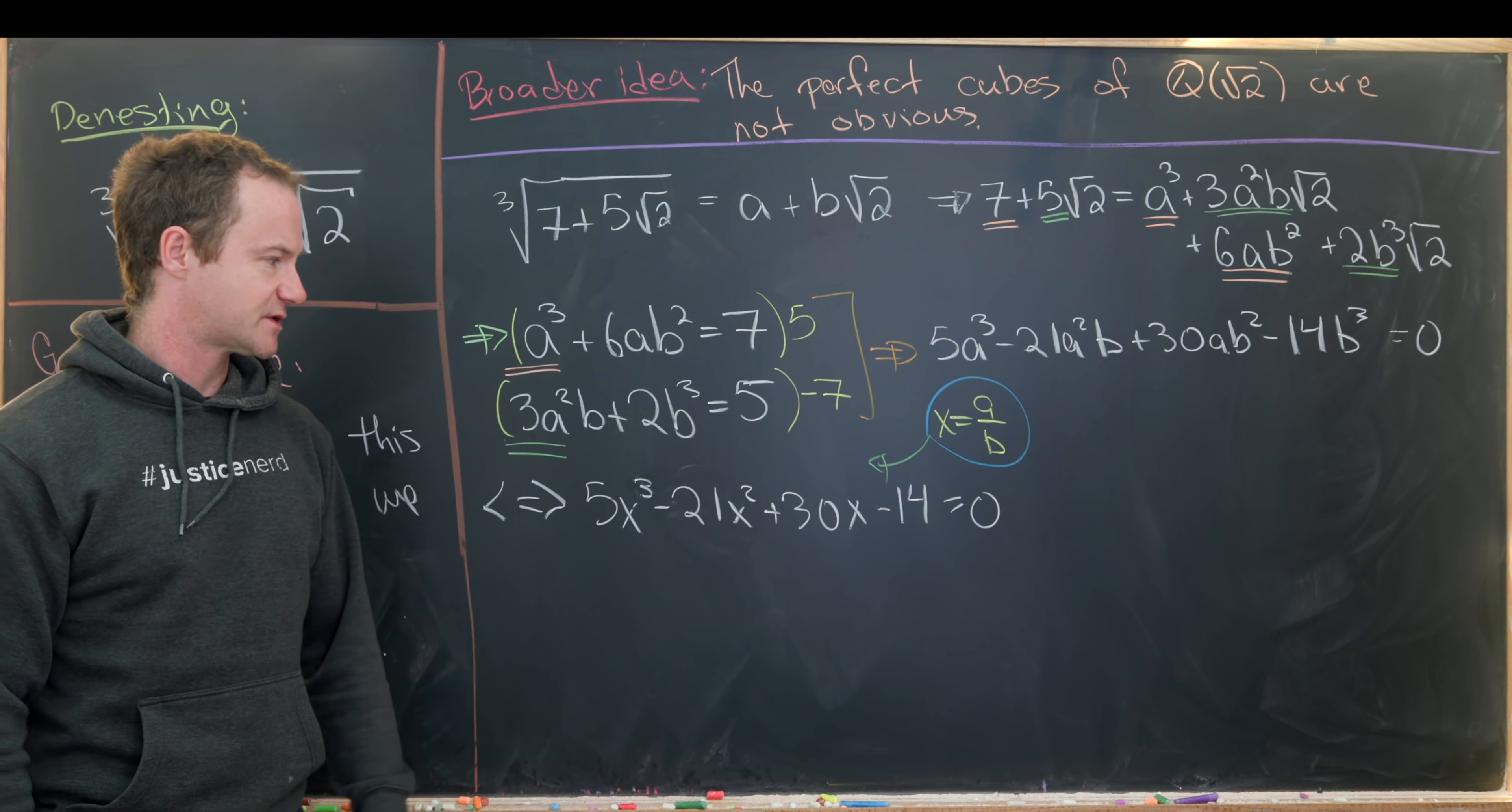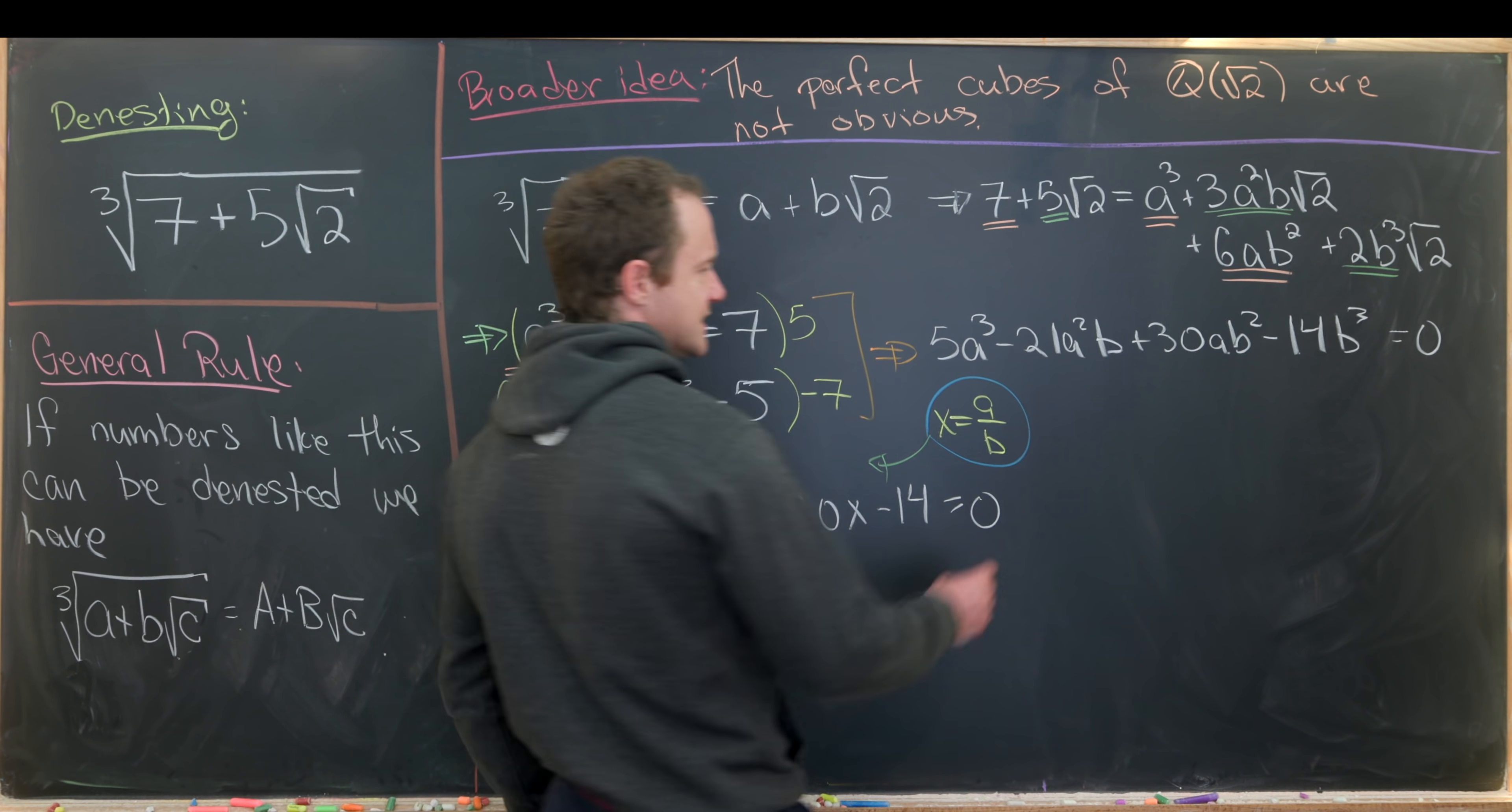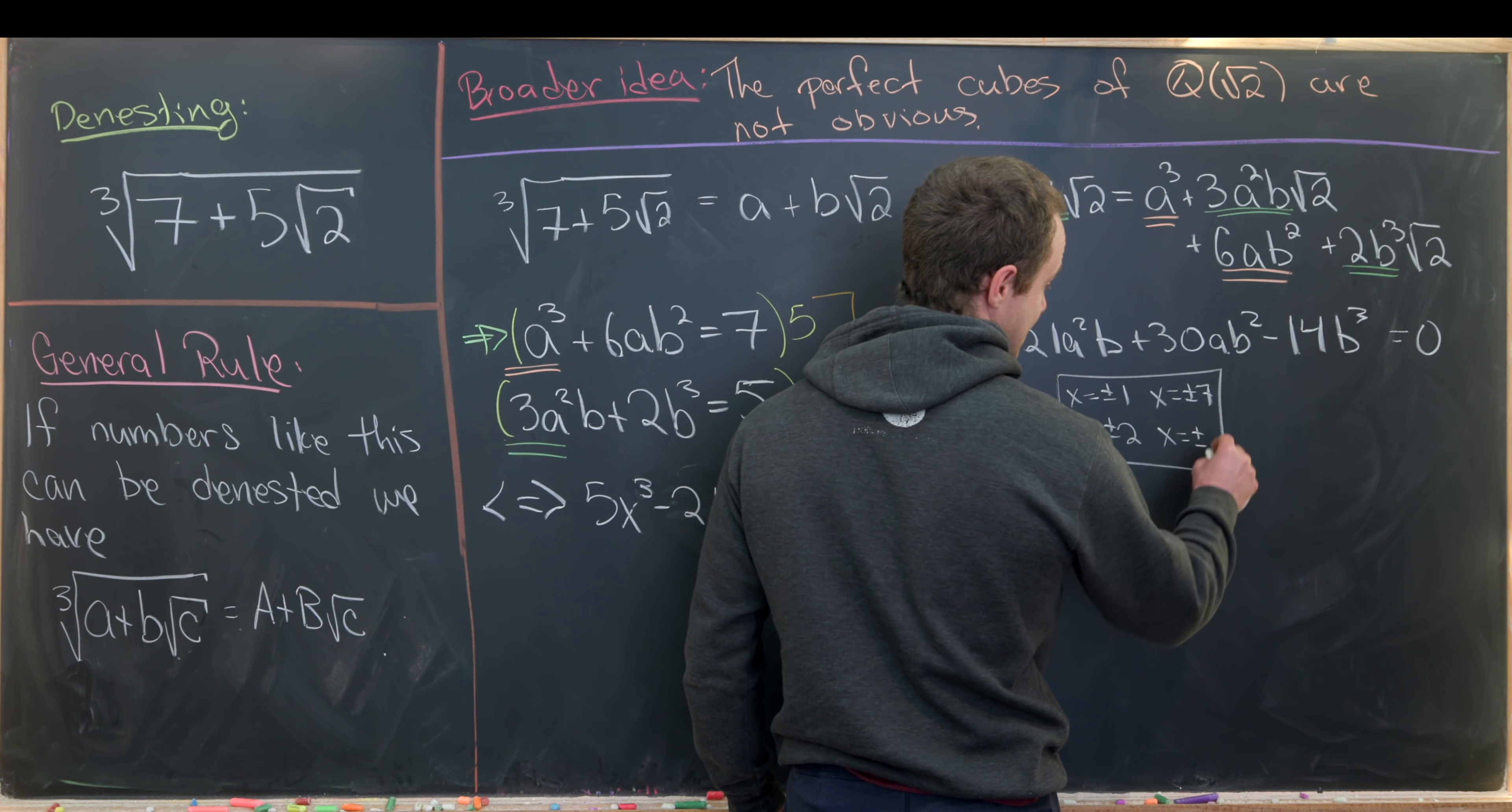But now looking at this we can think about how do we find roots of cubic polynomials. And maybe the best way to do that is with the rational root theorem. So we might kind of guess our first rational roots. Let's notice that the possible roots will be x equals plus minus 1, x equals plus minus 2, x equals plus minus 7, and finally x equals plus minus 14.